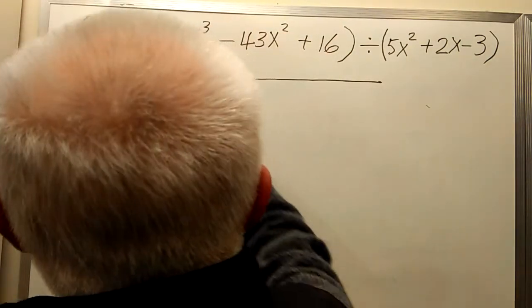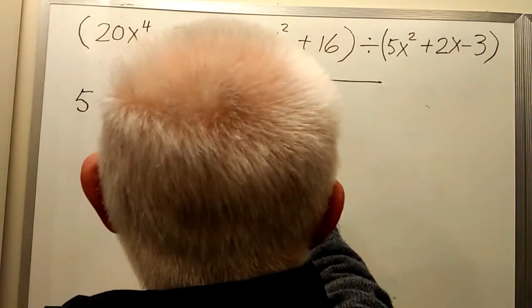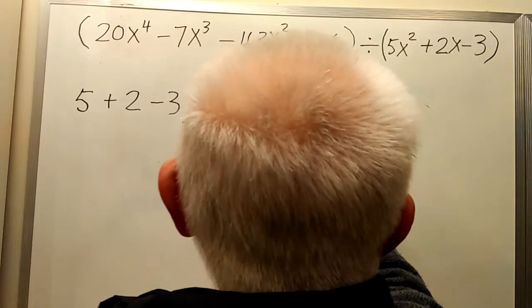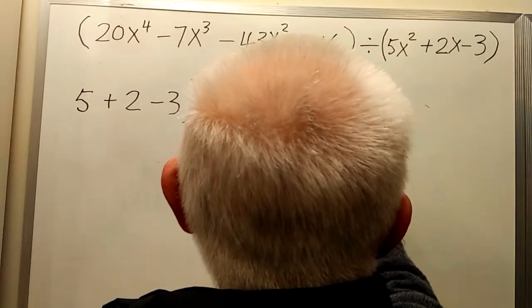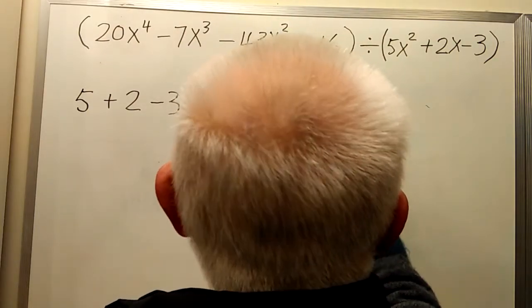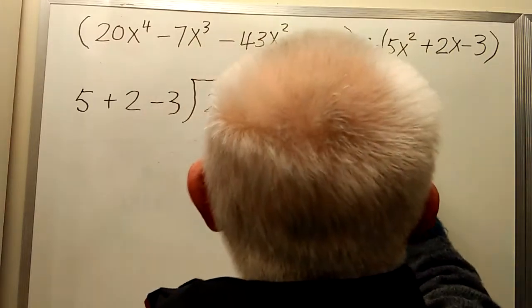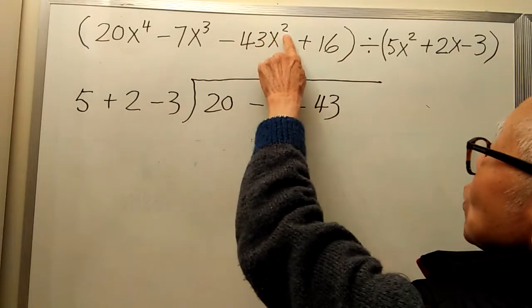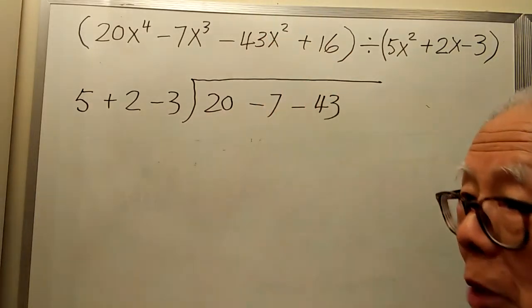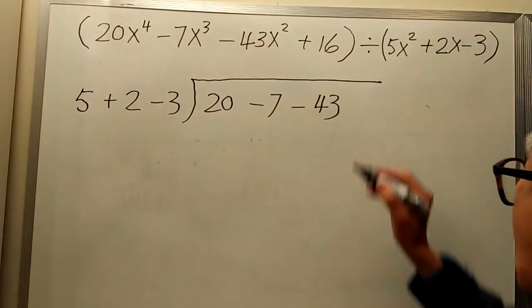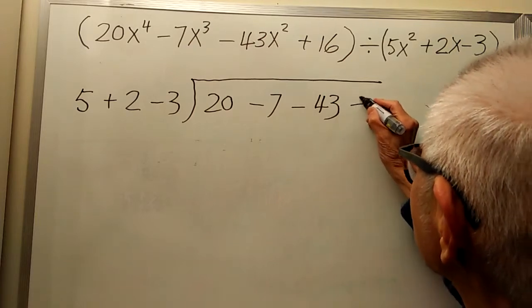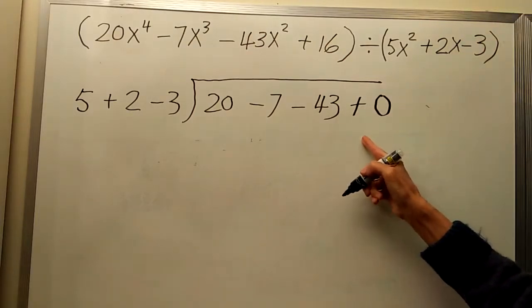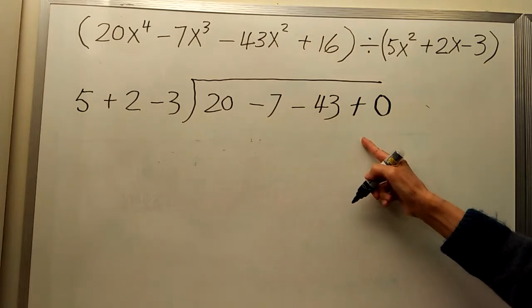20x⁴ minus 7x³ minus 43x² plus 16 divided by 5x² plus 2x minus 3. I am missing the x term. The 0 represents I have no x term.